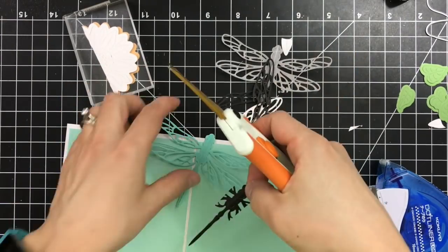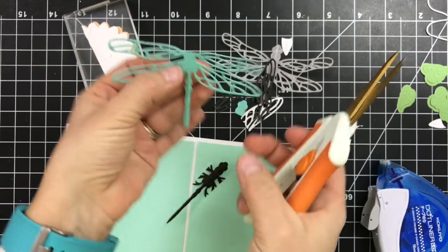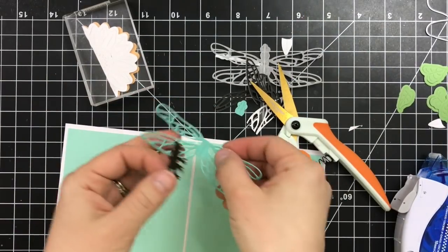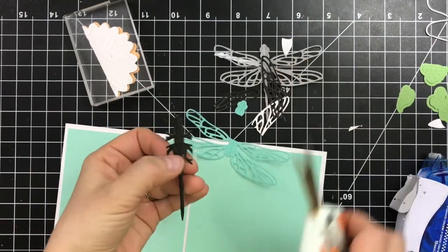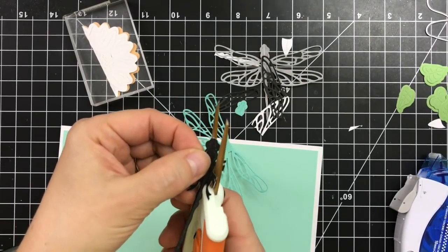Next we're creating the dragonfly pop-up. From the black we're creating the body. That one has the mountain fold and then the wings. I'm just cutting off the head and the rest of the body. And from the black I cut out the wings.